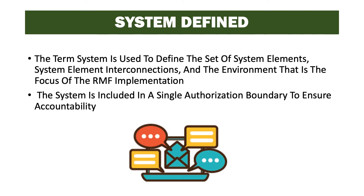The term system is used to define the set of elements, system element interconnections, and the environment that is the focus of the RMF implementation. The system is included in a single authorization boundary to ensure accountability — everything within that boundary is the system in scope, and the system owner has the ability to implement controls on everything in it. It's easy to make the boundary too small, creating too many RMF packages, or too big, making it take forever to complete one RMF run. Getting the system boundary set correctly is as much of an art as it is a skill.